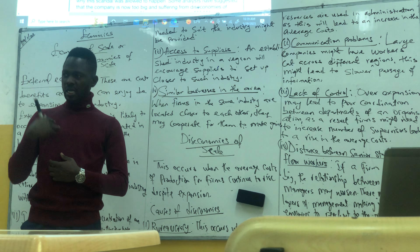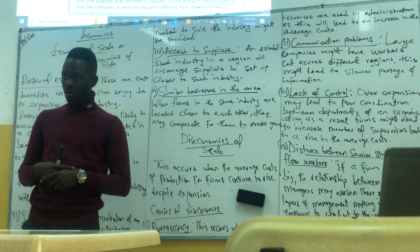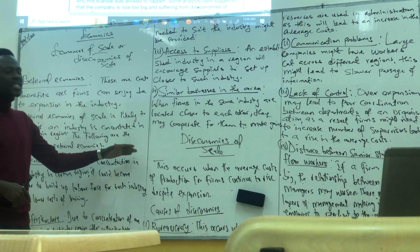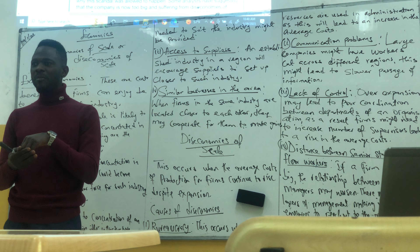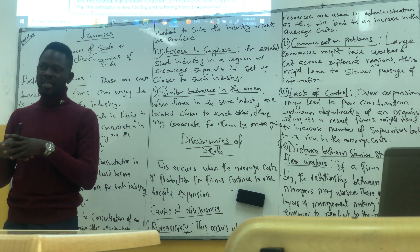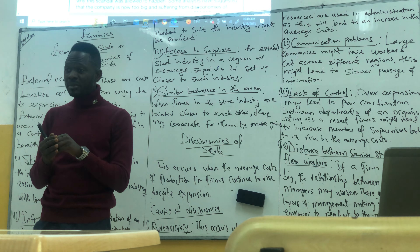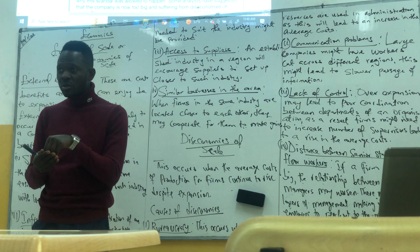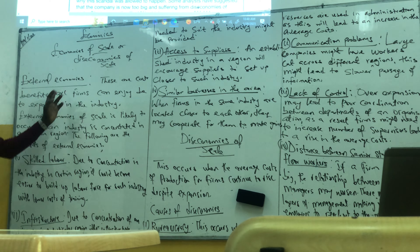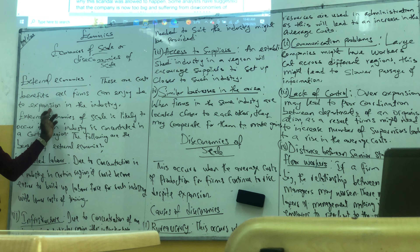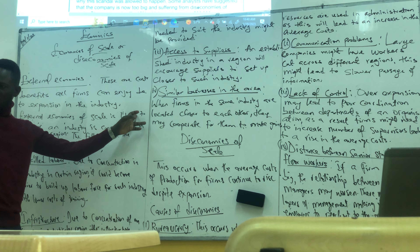We're continuing with economies of scale. Last class we talked about internal economies of scale. Today we need to talk about external economies of scale. External economies of scale is a cost advantage that firms in an industry are enjoying because the industry is expanding — because the industry is getting bigger. So all the firms in that industry are enjoying the cost benefit because the industry itself is expanding.